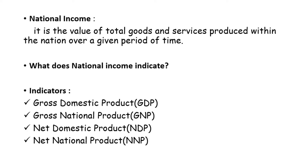Now, what does national income indicate? Majorly, there are three sectors: the agriculture sector, the industrial sector, and the service sector. National income shows the growth of these sectors. Ideally, national income increases every year. When national income increases, it means these sectors are growing. Growth automatically generates employment, and employment gives individuals income, which in turn raises their standard of living.